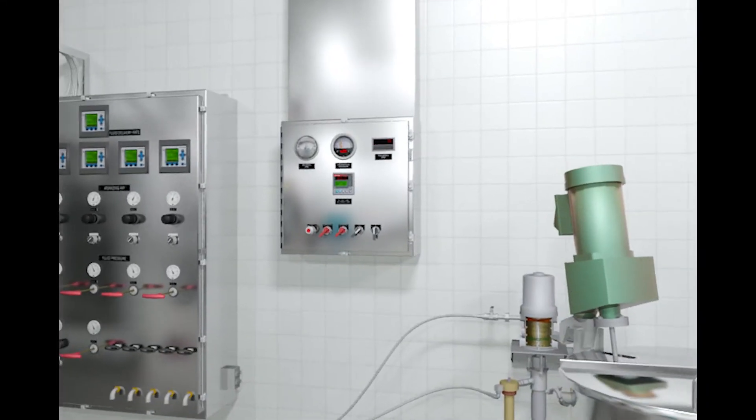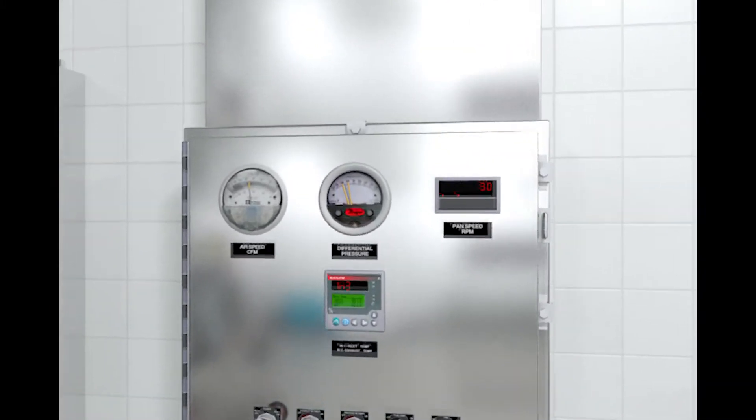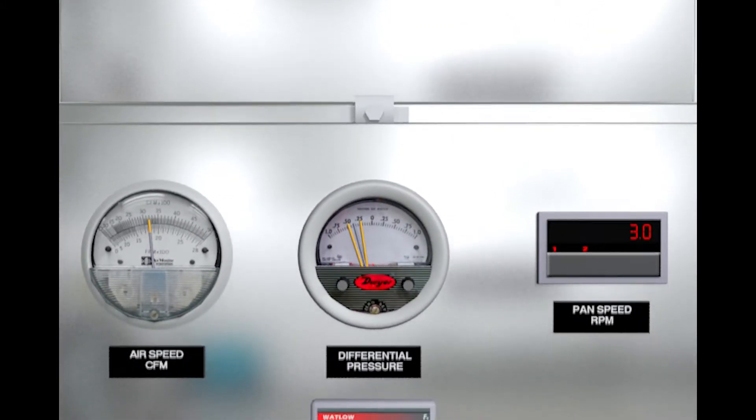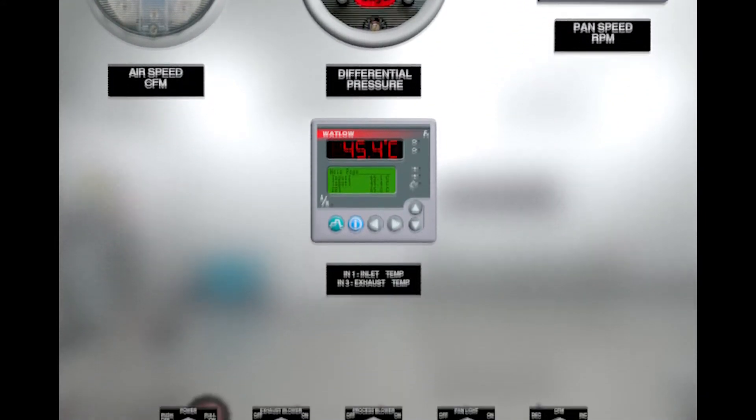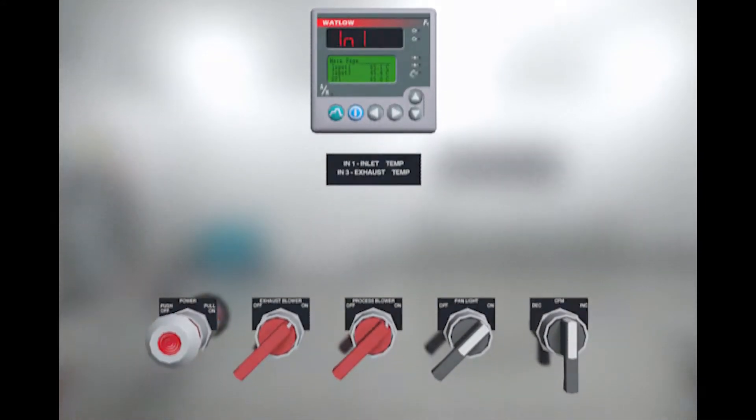The airflow is regulated for temperature and volume to control drying rates, while maintaining a slightly negative drum pressure relative to the room to isolate the operator from product dust and overspray.